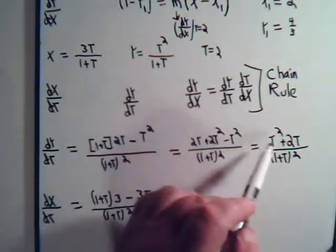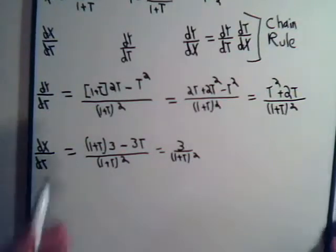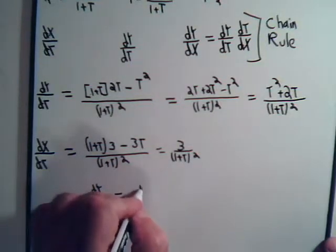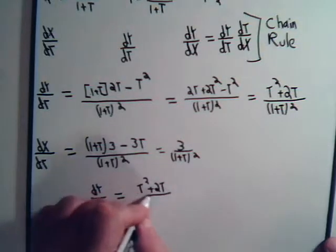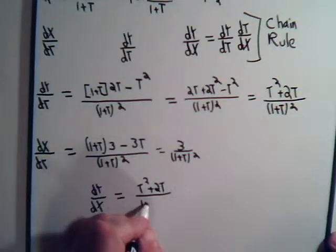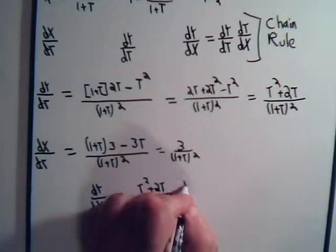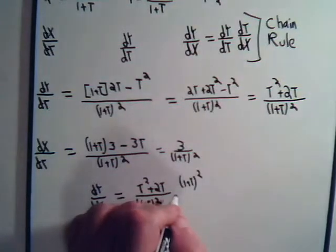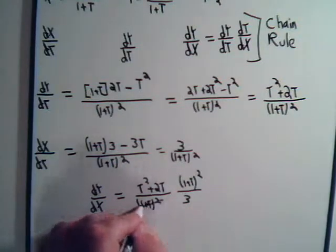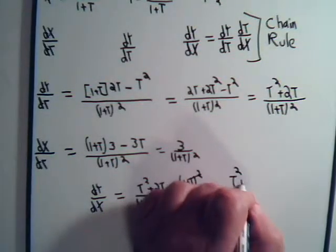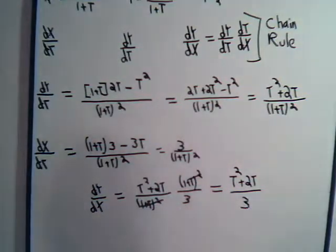We want dy/dx. That's dy/dt, that's this. So dy/dx equals t squared plus 2t divided by 1 plus t quantity squared. And we have to multiply that by dt/dx. Here we have dx/dt, so that's going to be the reciprocal of this that we're going to multiply by. So we have 1 plus t squared divided by 3. These cancel out. dy/dx equals t squared plus 2t divided by 3.